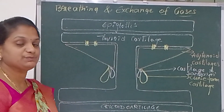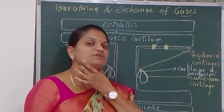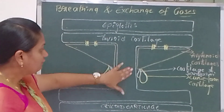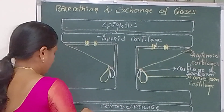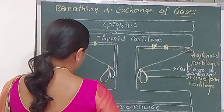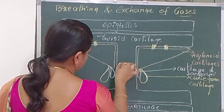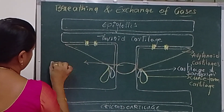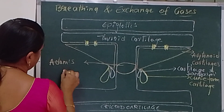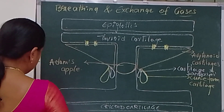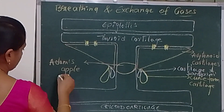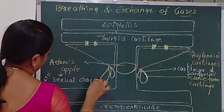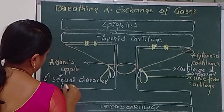The voice is produced by the rotation of the arytenoid cartilage. The vibrations are produced exactly here, at the arytenoid cartilage. The mid-ventral position of the thyroid cartilage has a projection, and this projection is called Adam's apple. Adam's apple is a secondary sexual character in males.